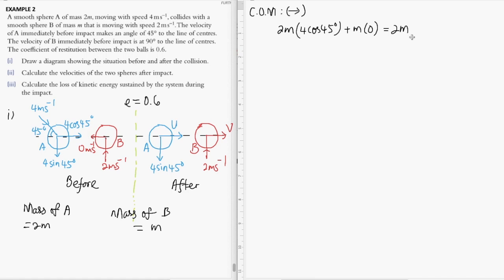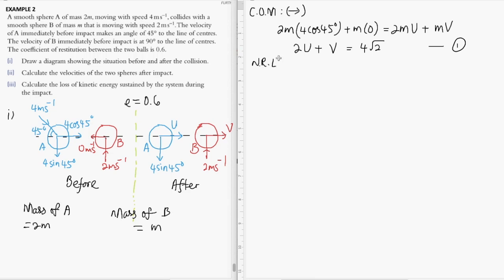After the collision this equals 2mu plus mv. Simplifying, cos45° is 1/√2, so 4cos45° gives 4/√2 which is 2√2. Dividing through by m gives 2u + v = 4/√2, which simplifies to 2u + v = 2√2 × 2, giving us 4/√2. Let me verify: that is indeed 2√2 × 2 = 4/√2. This becomes our first equation.